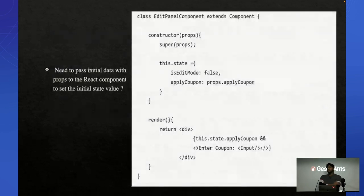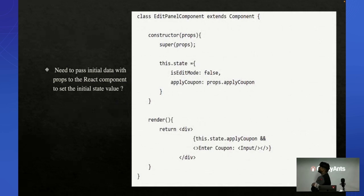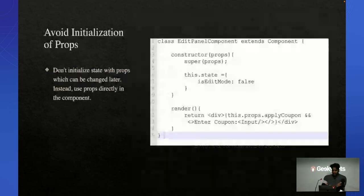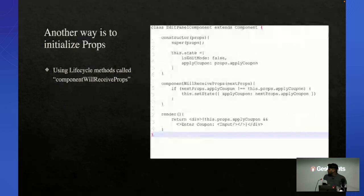One basic mistake everyone commits is initializing props in the constructor. If the props later change, this function will not re-render because the states were declared in the constructor itself. Rather than declaring states in the constructor and passing props there, you should declare them and pass them in a separate function. You can also use lifecycle methods like shouldComponentUpdate — it is inbuilt, available, and highly optimized for these kinds of problems.